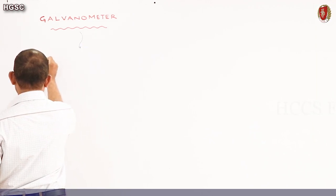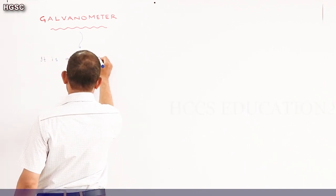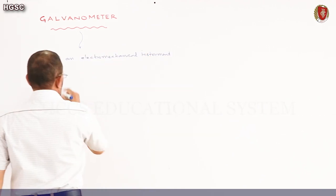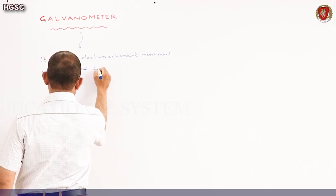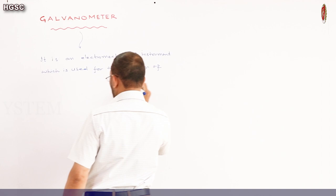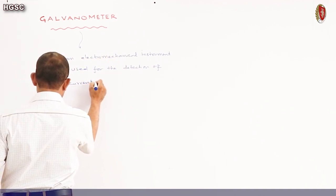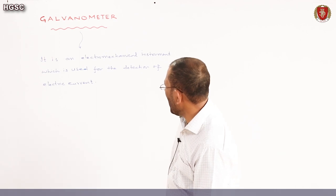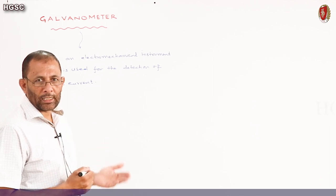First of all, what is a galvanometer? A galvanometer is an electromechanical instrument which is used for the detection of electric current.